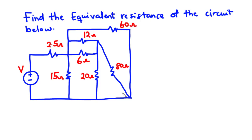Now let's find the equivalent resistance of the circuit below. The circuit seems very complex, but using those two principles we can find the total resistance easily. Focusing on this loop, we can go through it without passing through any other circuit element except the 12-ohm and the 6-ohm resistors, which means they are connected in parallel. Similarly, the 20-ohm and the 80-ohm resistors are also connected in parallel.